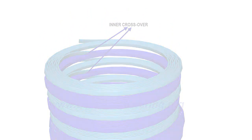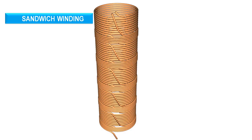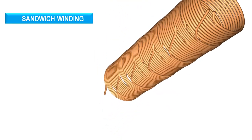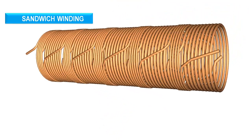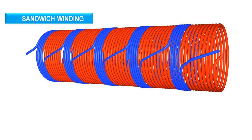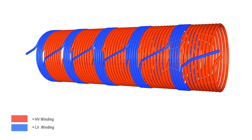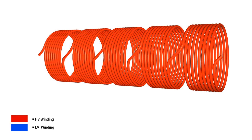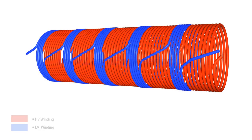Sandwich windings use a unique configuration. Here, high voltage and low voltage windings sit in the same magnetic axis, and each high voltage unit lies between two low voltage units. Thus, the leakage flux is greatly reduced.